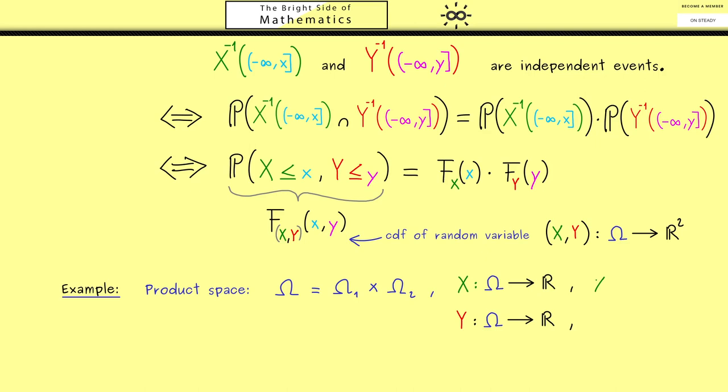More precisely, this means when X gets two inputs, lowercase omega_1, omega_2, then it does not care what the second input is. In other words, it is just a function of one variable, the function f with input omega_1.